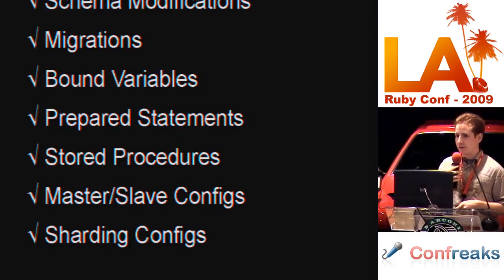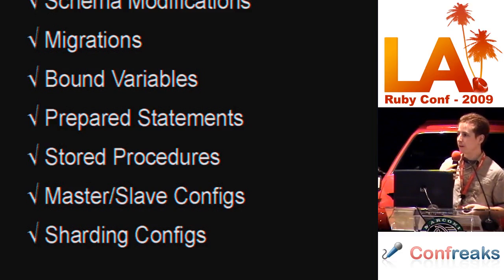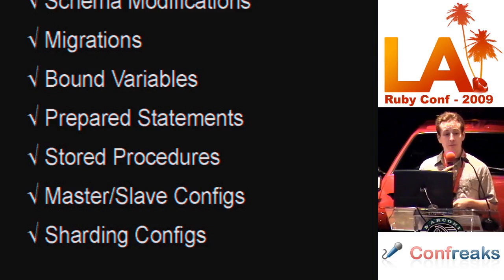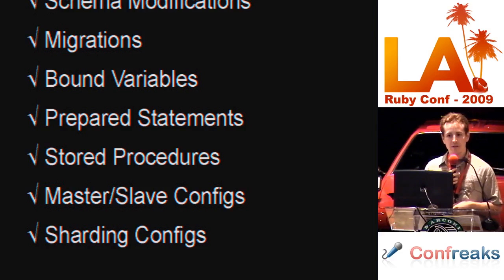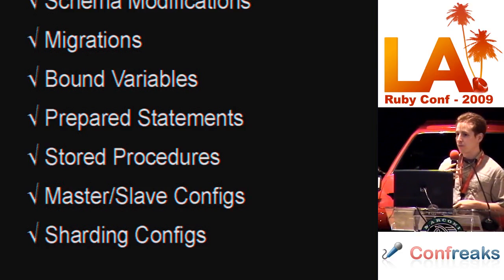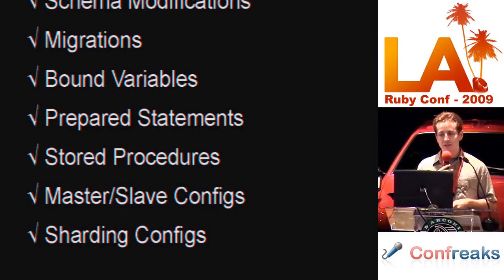Sequel supports creating and altering tables, as well as most other forms of schema modifications, which you can use both inside and outside of migrations. Sequel supports both bound variables and prepared statements, with native support on four separate adapters and emulated support on all the others. Sequel supports stored procedures for MySQL and JDBC adapters, and supports both master-slave database configurations and sharding configurations.